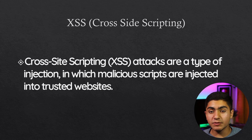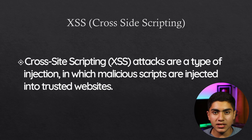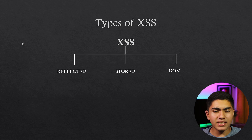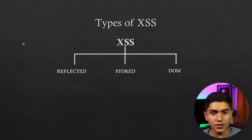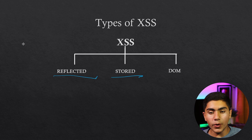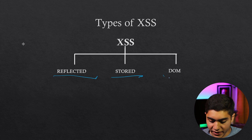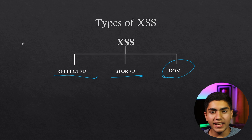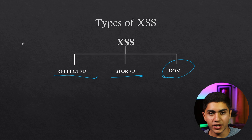I'll be able to explain it better once we do the practical version, but to give you a rough idea — there are three types of XSS vulnerabilities: reflected, stored, and DOM XSS. We won't be talking about DOM XSS in this video as it takes a lot of time and I have to do a separate video about it.